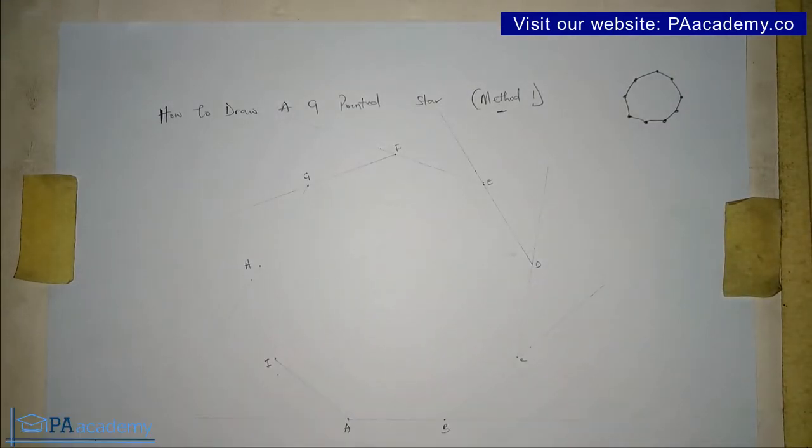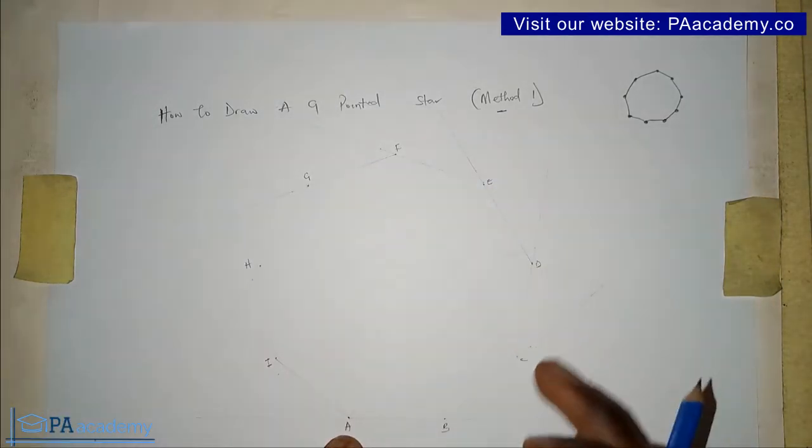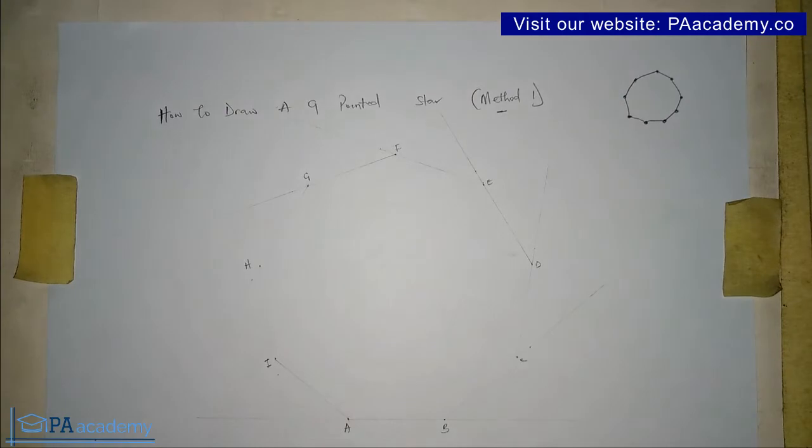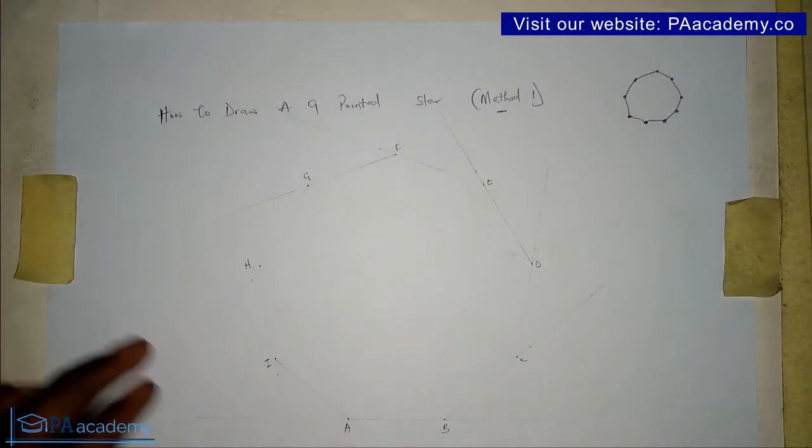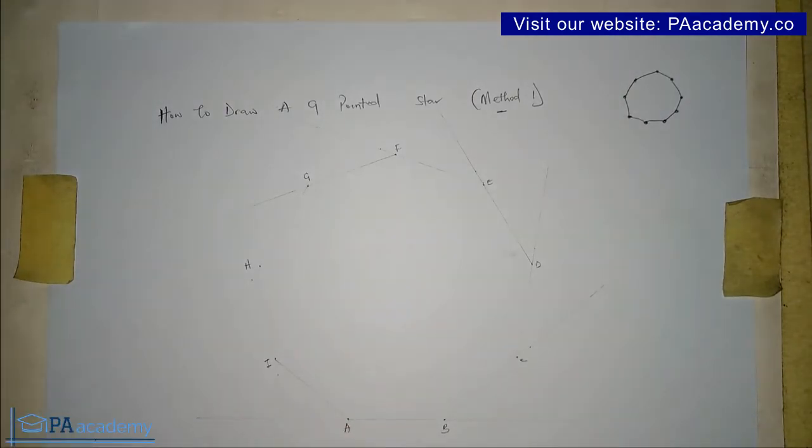Now let's go ahead, the first method, how do we draw a nine-pointed star? I have identified all the vertices from the nonagon. Starting from point A, you can start from anywhere but I'm choosing to start from point A. You are going to draw a line from vertex A to vertex C, skipping vertex B. What that simply means is you draw a line from one vertex straight to another vertex, skipping one vertex in between. This is what we are going to be having.